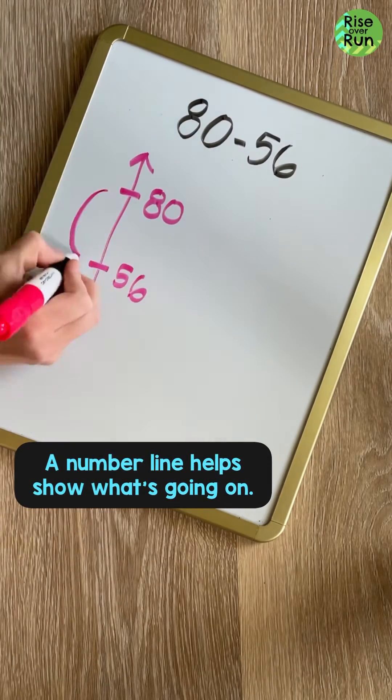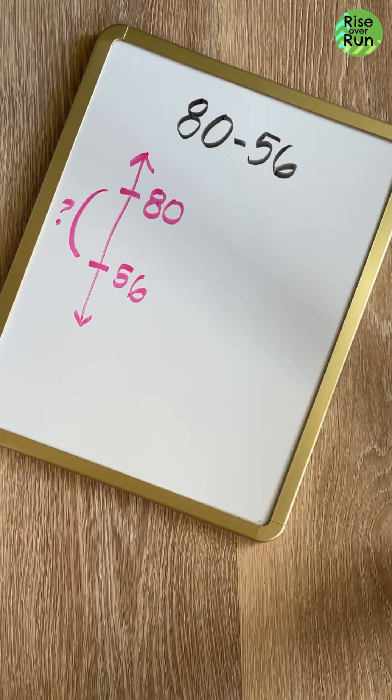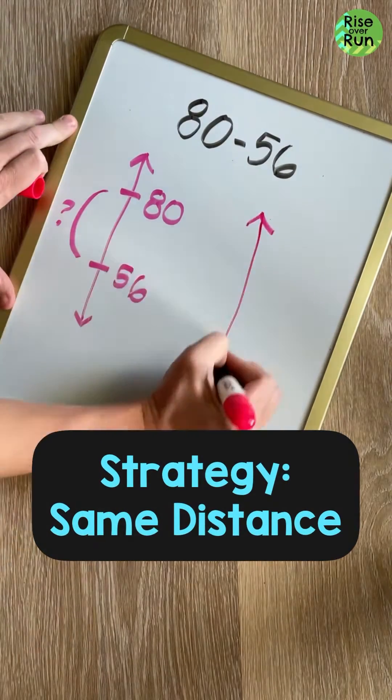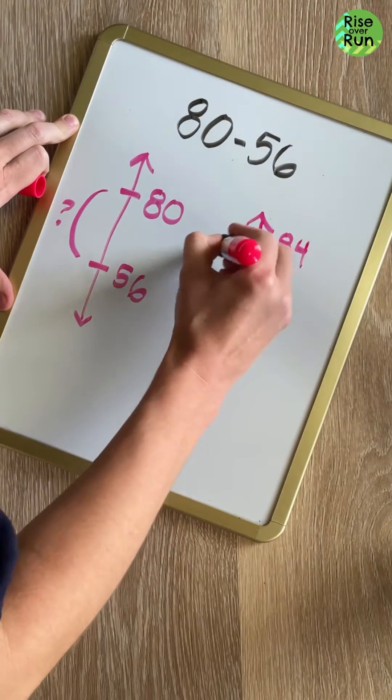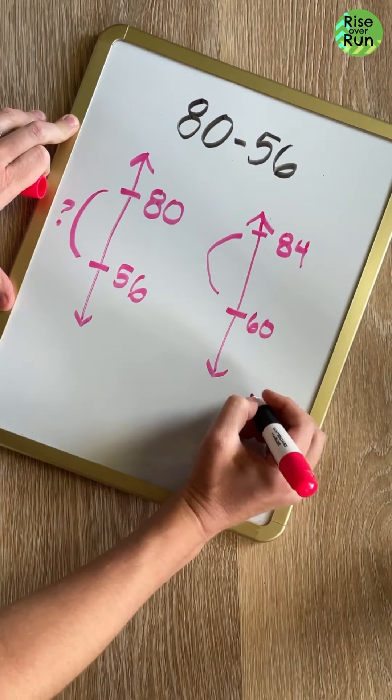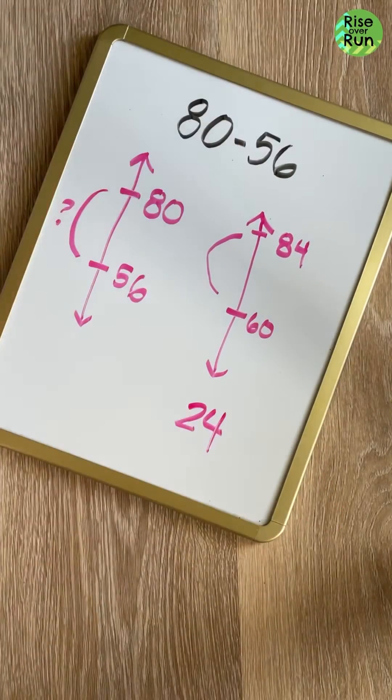Subtraction can be thought of as a distance. I can change these numbers as long as I maintain the same distance. 60 is an easier number to subtract, so I'll maintain that distance by subtracting it from 84. The distance has not changed, but it's easier to calculate, and I get an answer of 24.